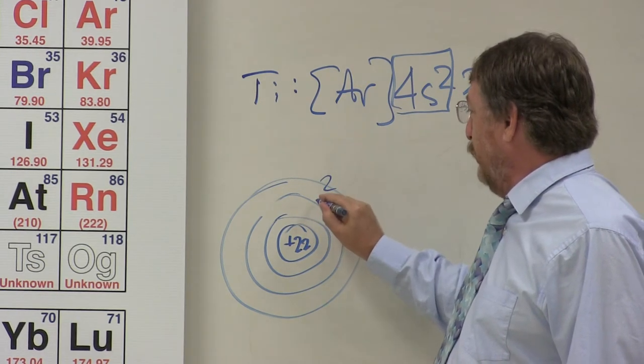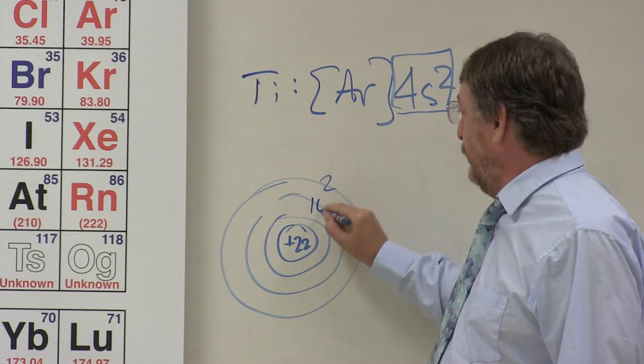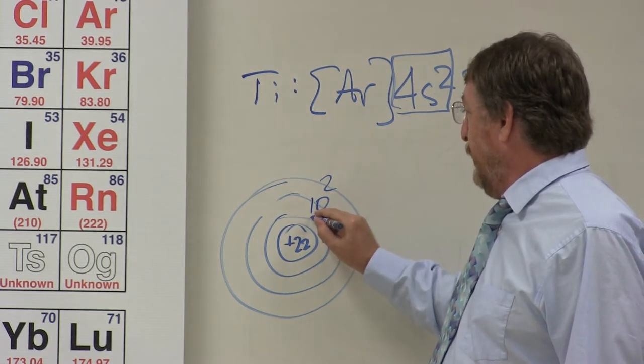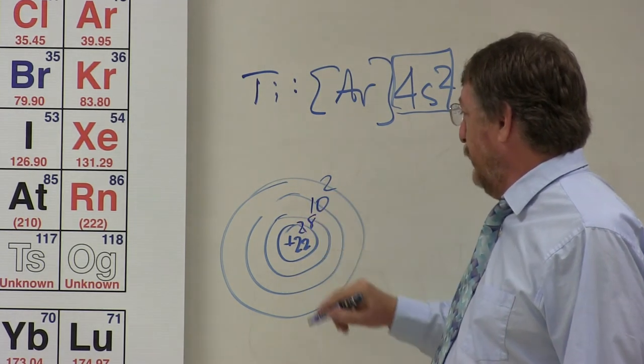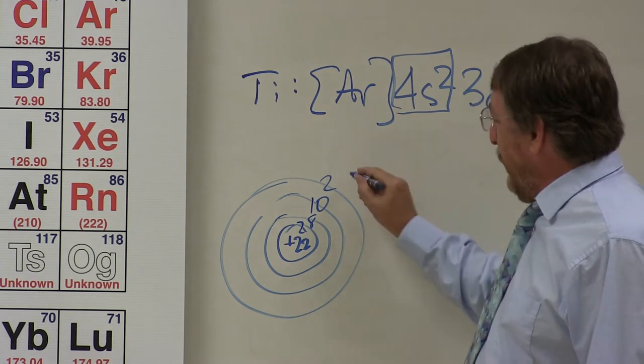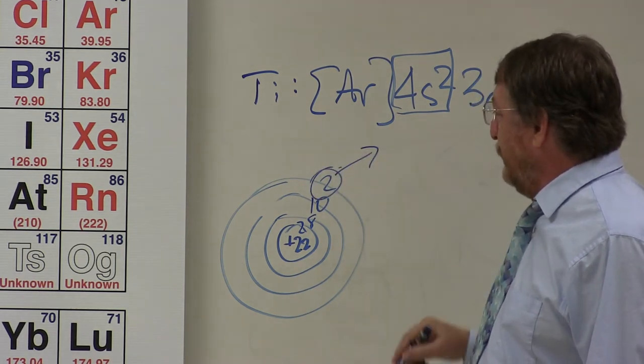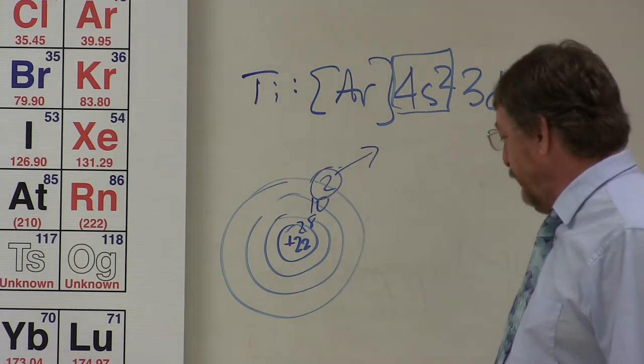We've got ten electrons sitting here, and then eight electrons, and two electrons, like that. So these outer shell electrons are going to be taken off first, that's the way titanium is going to react.